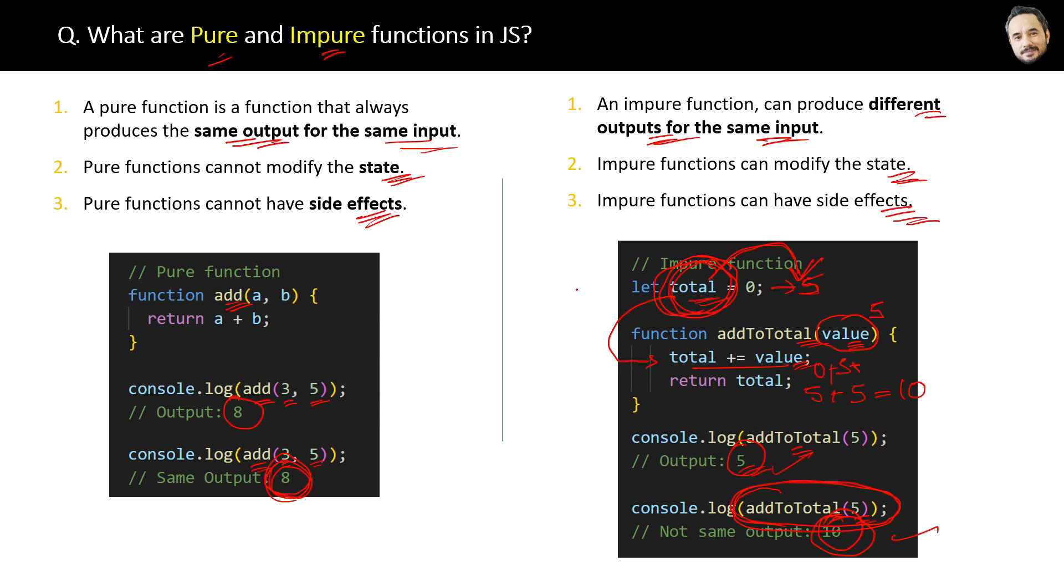So this is like a side effect of executing this addToTotal function. So basically, we are executing a function, but it is modifying something which is external to it. This total variable was external, so that was like a side effect. Great! Now I think you can explain this to anyone.